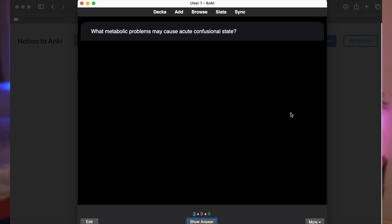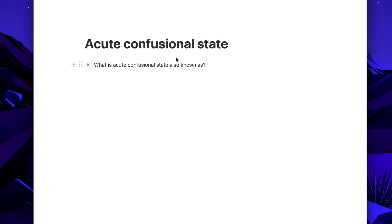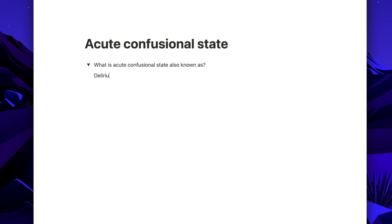The first thing you're going to want to do when making your Notion notes is to make them using toggle lists. I've already made a separate video on how to make notes in Notion in medical school, so if you haven't checked that out already then make sure you do. The reason why you want to use toggle notes is to promote active recall.